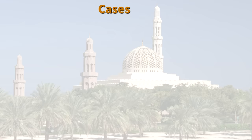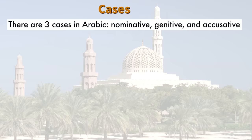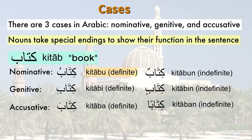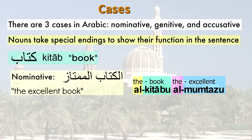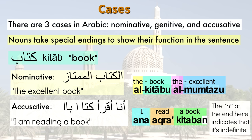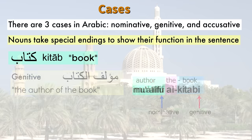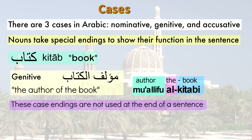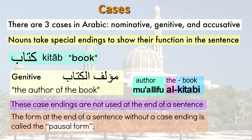One aspect of Standard Arabic is its case system. There are three cases: nominative, genitive, and accusative. Nouns take special endings to show their function in the sentence. For example, the word kitab meaning 'book' is kitabun in nominative, kitabin in genitive, and kitaban in accusative. The N sound at the end indicates that a noun is indefinite. These case endings are only used when a word is followed by something — the form at the end of a sentence without a case ending is called the pausal form. They are generally only used in prepared texts or speeches.